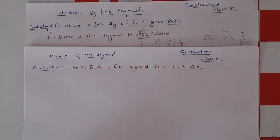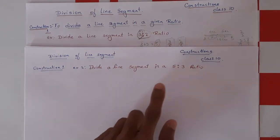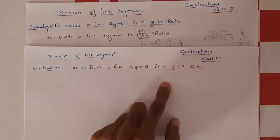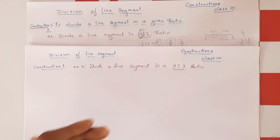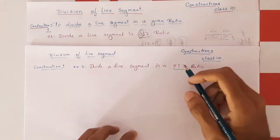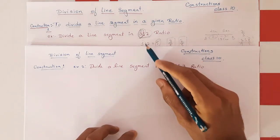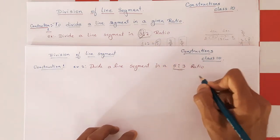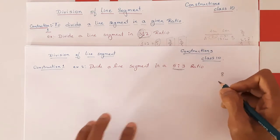Coming to the next problem, the same type of problem. The first one had ratio 3:2, now the ratio is 5:3. The same construction method applies. The first step is to add the ratio: 5 plus 3 equals 8. So write down the total ratio — the total ratio of the line is 8.